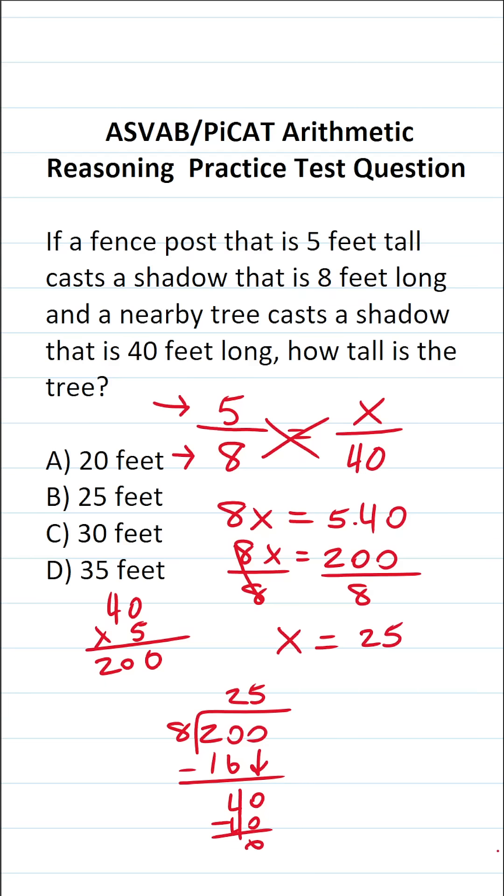So we can see x is 25. In other words, the height of the tree is B, 25 feet.